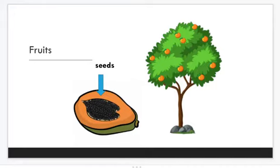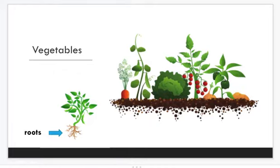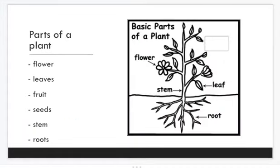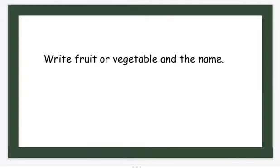Fruits, seeds, vegetables, roots — parts of a plant: flower, leaves, fruit, seeds, stem, roots. Write fruit or vegetable and the name.